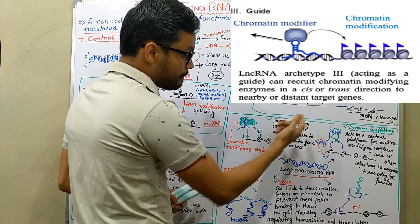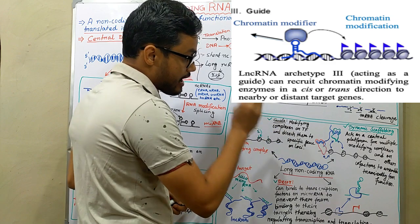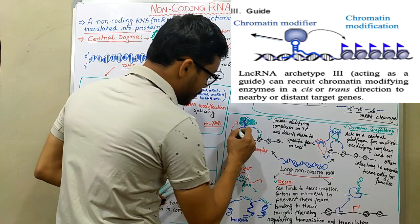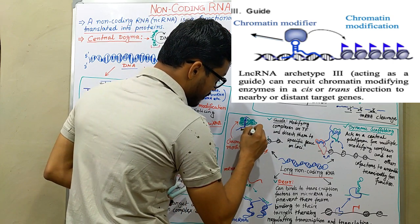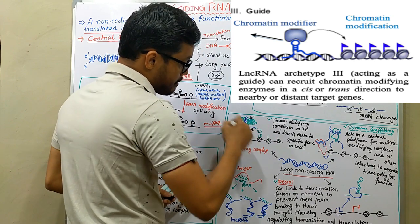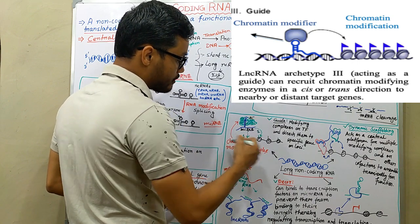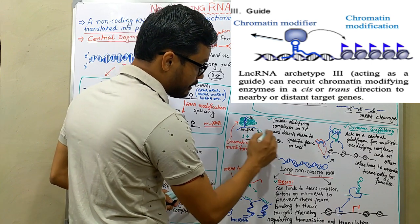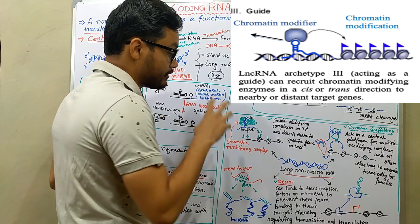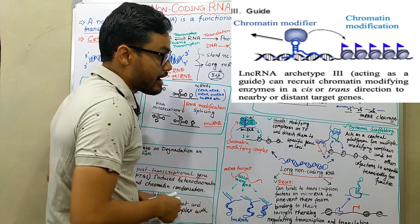The guide role involves modifying transcriptional factors and directing them to a specific gene or loci. Here you can observe the long non-coding RNA and the chromatin modification complex — shown in green. When the long non-coding RNA binds with the chromatin modifying complex, it blocks particular transcription factors at a specific gene or locus, thereby stopping the transcription and translation of that particular gene.